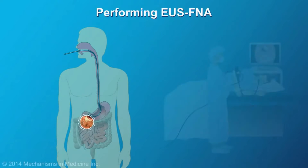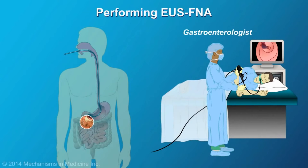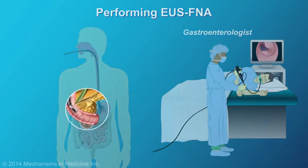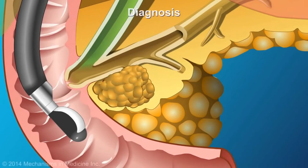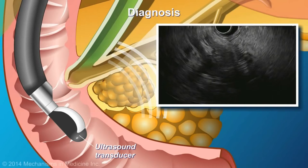The area of interest is then carefully examined. When indicated, samples are obtained using FNA for further analysis. The sound waves emitted from the ultrasound transducer yield detailed images when these sound waves bounce back and are analyzed.